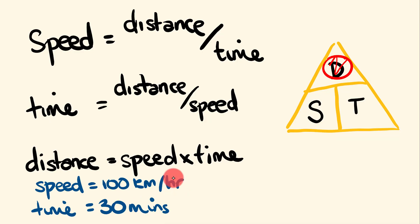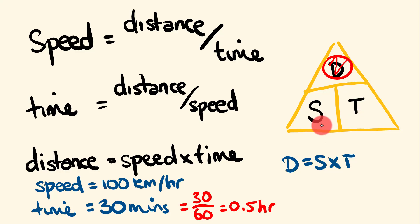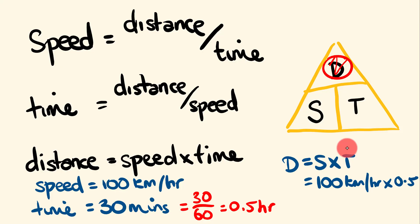To convert 30 minutes into hours: 30 out of 60 minutes equals 0.5 hours. Now we can work out the distance. Distance = speed × time = 100 km/h × 0.5 hours = 50 kilometers. So the distance traveled is 50 kilometers. And that's how you work out speed, time, and distance calculations, including how to handle minutes instead of hours by converting them first.